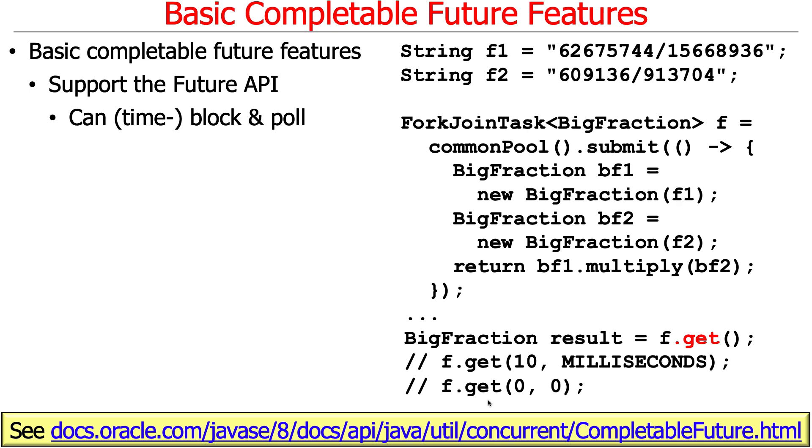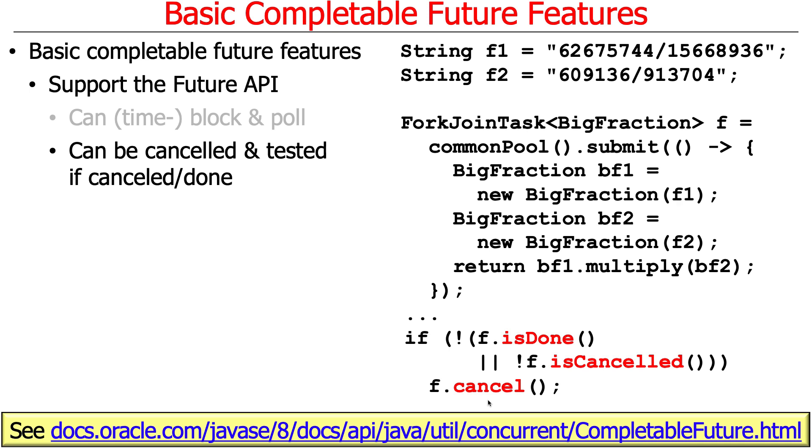You can either get it with an indefinite block, or you could also do a timed block as well as a polling block where it doesn't block at all really, it just checks to see if the result is there. So that's a very simple feature, essentially the same as you would get with a regular future.